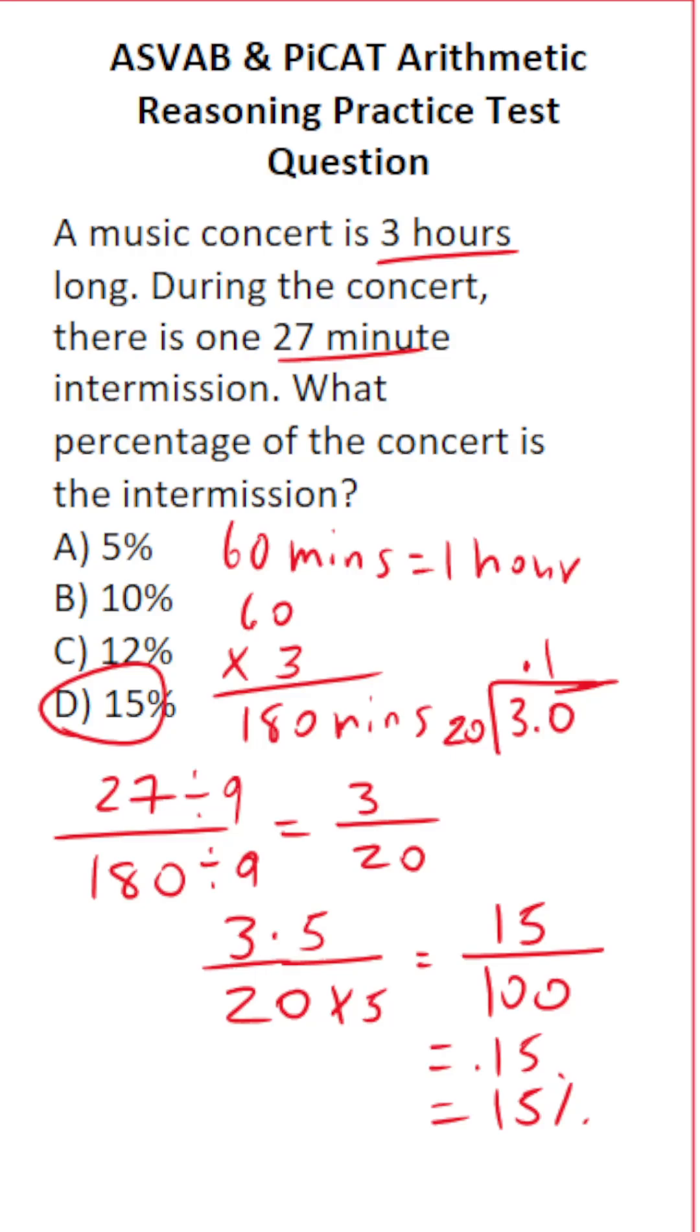It's going to be 1 time. 20 times 1 is 20. 30 minus 20 is 10. Again, we have a 0 here that we can bring down.